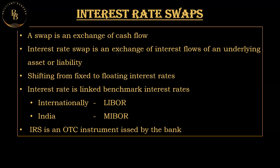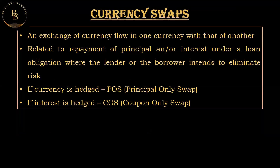A currency swap is an exchange of currency cash flows from one currency to another — for example, from Indian rupees to US dollars. Let's take an example: an Indian company A and a foreign company B. The Indian company has a fixed-rate loan in Indian rupees while the foreign company B has a floating-rate loan in their local currency.